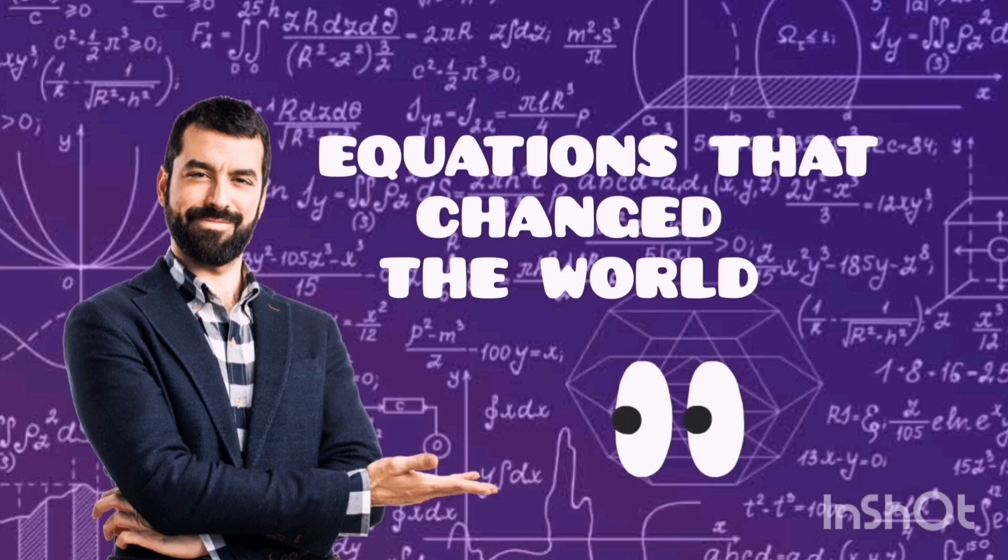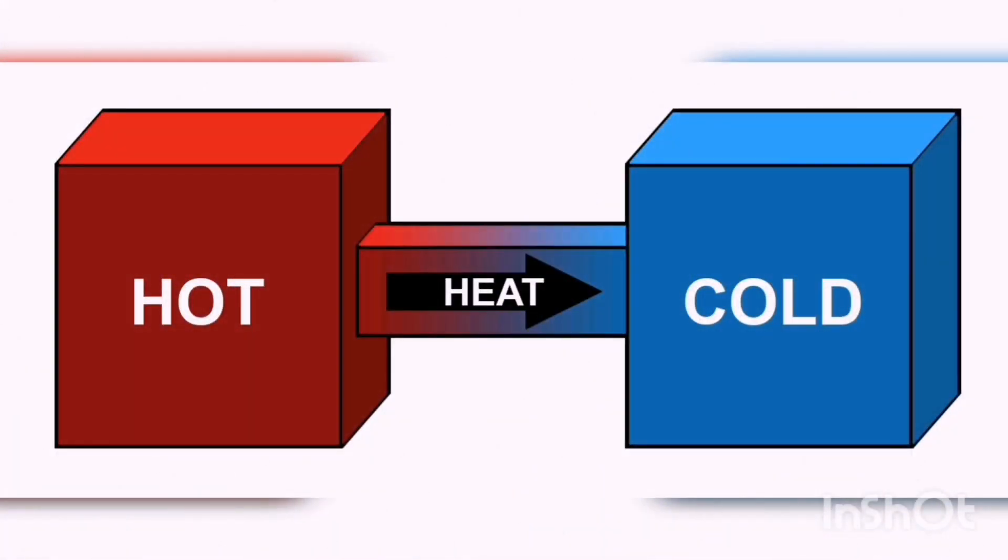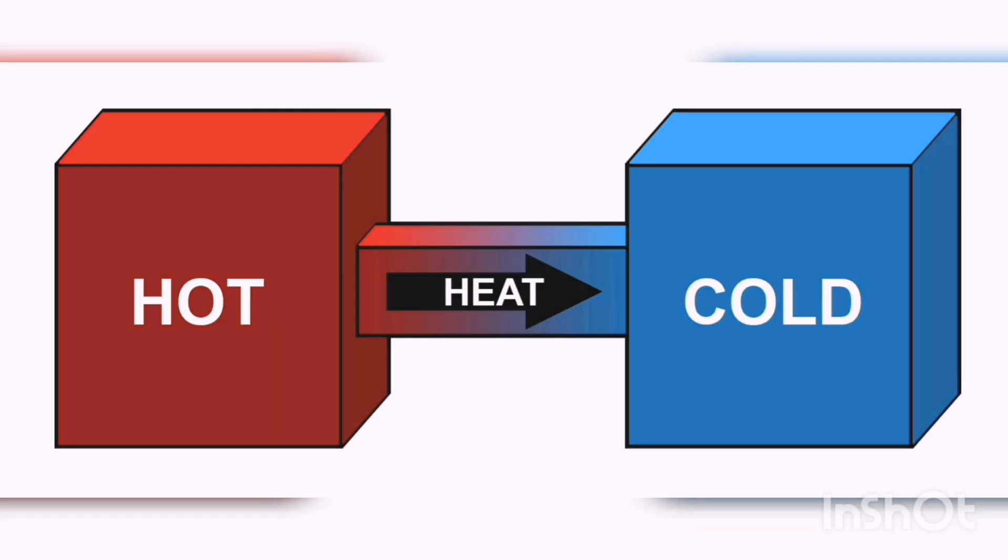Six equations that changed the world. Second law of thermodynamics. This law was proposed by Rudolf Clausius in 1850. It states that energy always flows from high concentration to low concentration.